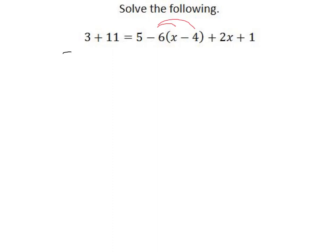So we have 3 plus 11. It is very tempting to change that, but I'm doing one thing at a time. Minus 6x plus 24 plus 2x plus 1. Make sure when you're distributing this negative that you have the negative 6 multiplied by the negative 4 to get our plus 24 right here.